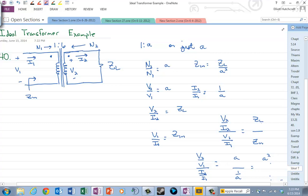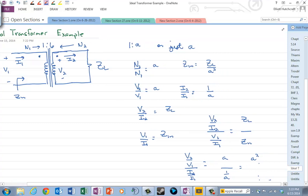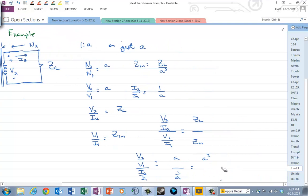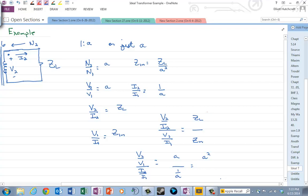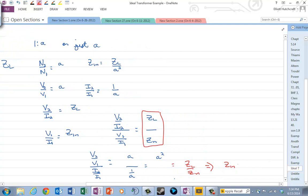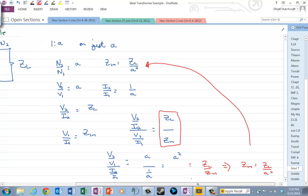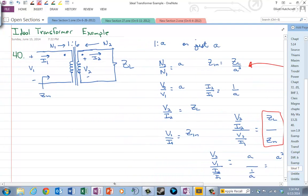And notice the right hand side of that, which is right here, is ZL over Zn. So this is where we get the Zn is equal to ZL over A squared. That's where this formula comes from for one of the ideal transform equations. So that one's not really all that important.